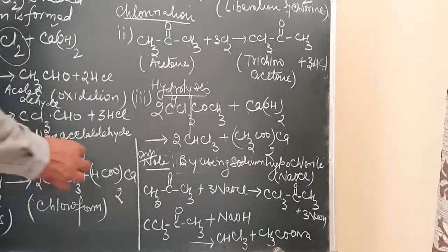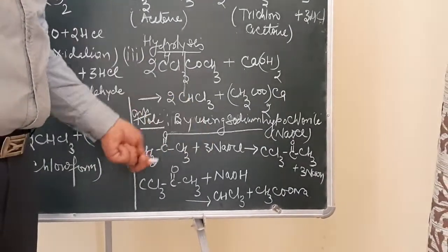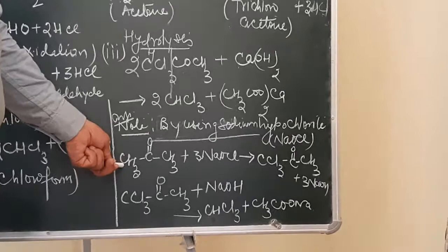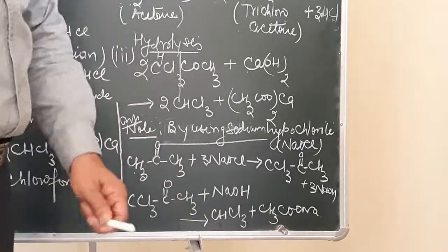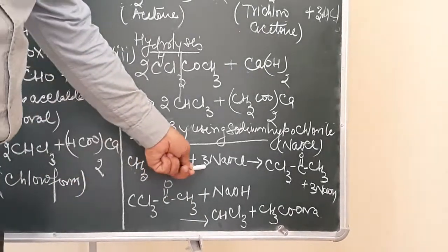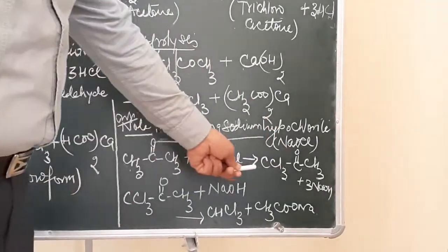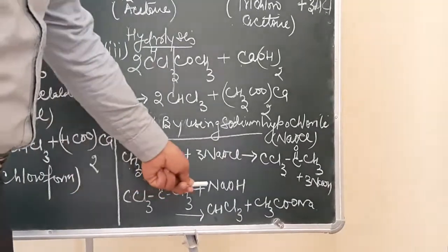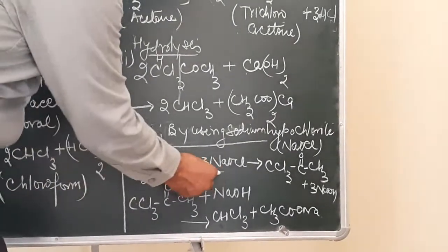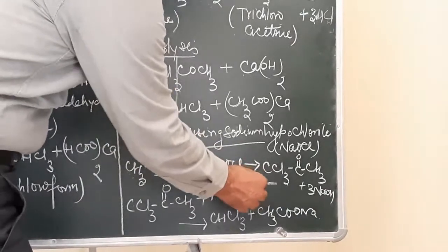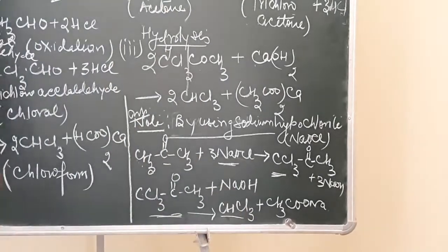The third method, very commonly asked in the ICSE board examination, is the action of sodium hypochlorite on acetone. When acetone is made to react with sodium hypochlorite (NaOCl), it results in the formation of trichloroacetone, which when treated again with sodium hydroxide results in the formation of chloroform. This will also be discussed as a property of acetone in that chapter.